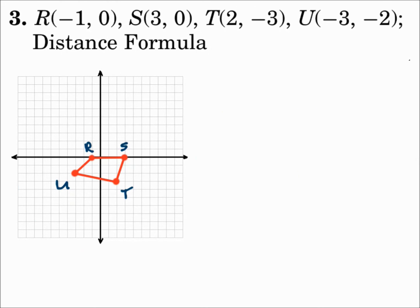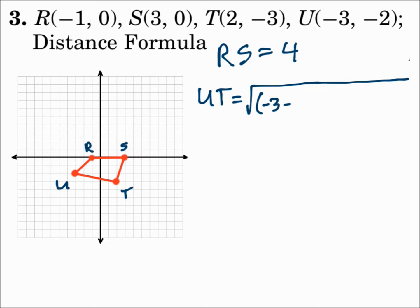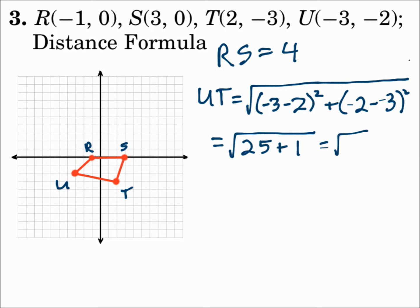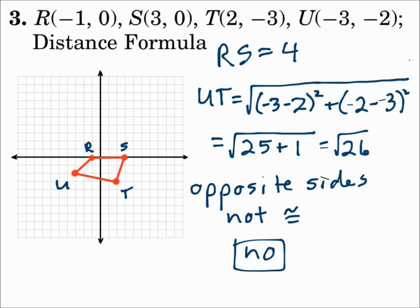Number three gives the coordinates of the vertices and says to use the distance formula, which tells us how long the sides are. For sides RS and UT: side RS is horizontal so we can count its length as 4. Since side UT is diagonal, we use the distance formula — the square root of (x₂ minus x₁)² plus (y₂ minus y₁)² — and that gives the square root of 26. Since 4 is not the same as the square root of 26, we don't have opposite sides congruent, so no, it's not a parallelogram.